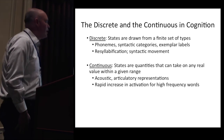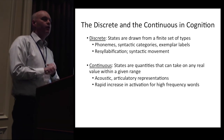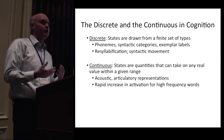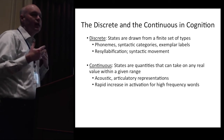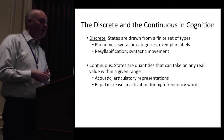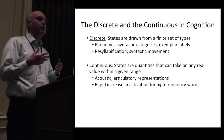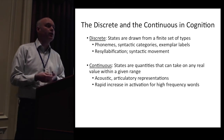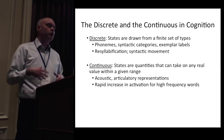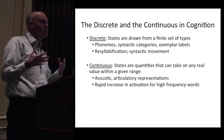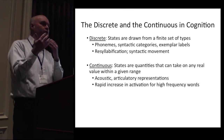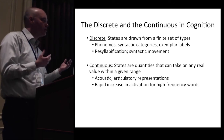Our talk today is about the discrete and continuous in cognition, and what we thought would be good is to start off by defining what we actually mean by those terms. A discrete representation or process is one in which states are drawn from a finite set of types. In terms of representations, you can think about things like phonemes, syntactic categories, labels, and exemplar theory — all distinguished by types. In terms of processes, you can think of linguistic processes that involve movement from one position to another; you're never halfway between those positions.